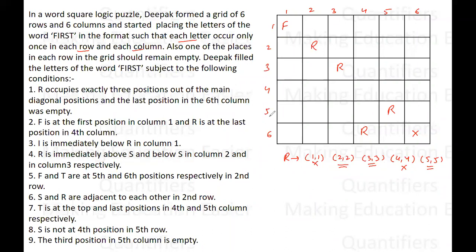I is immediately below R in column 1. The fourth point says R is immediately above S in column 2 — so S is below R in column 2 — and R is immediately below S in column 3, so S is above R in column 3.